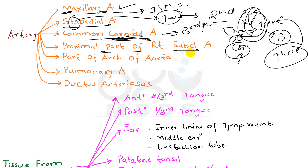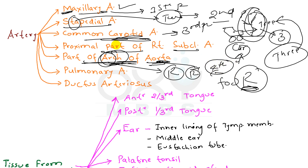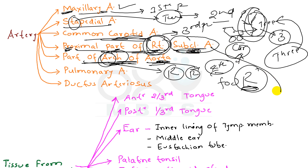Now coming to the proximal part of the right subclavian artery and part of the arch of the aorta. The 'r' in 'arch' and the 'r' in 'aorta' say to derive number 4. So part of the arch of the aorta is derived from the fourth pharyngeal arch. Similarly, the 'r' in proximal, part, and right subclavian artery — the proximal part of the right subclavian artery is also derived from the fourth pharyngeal arch.